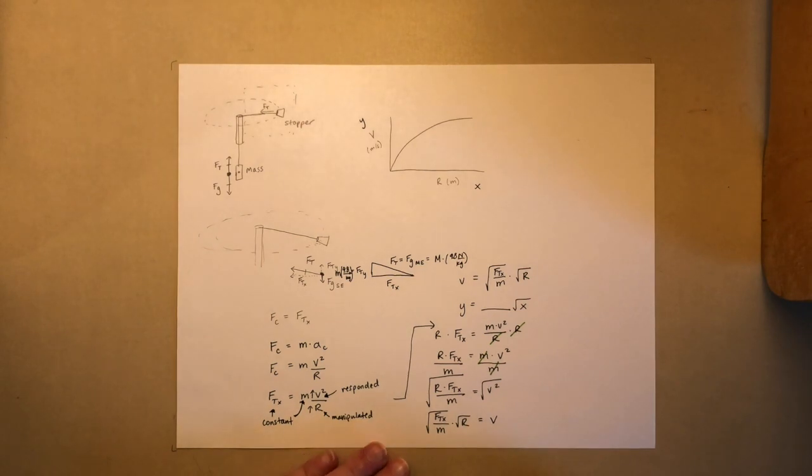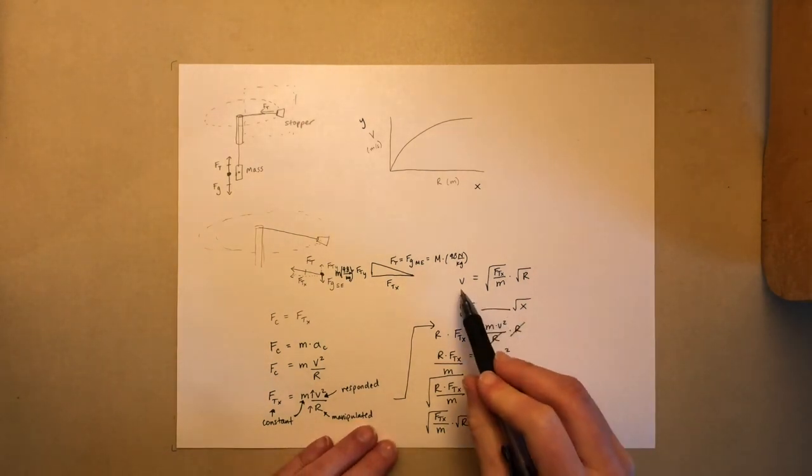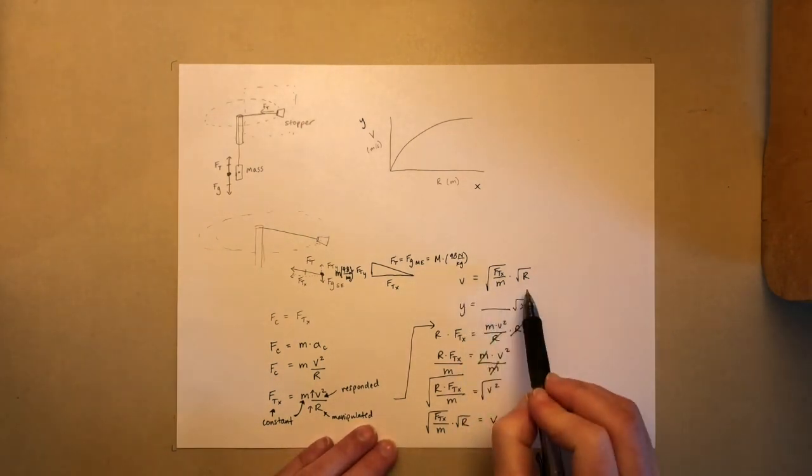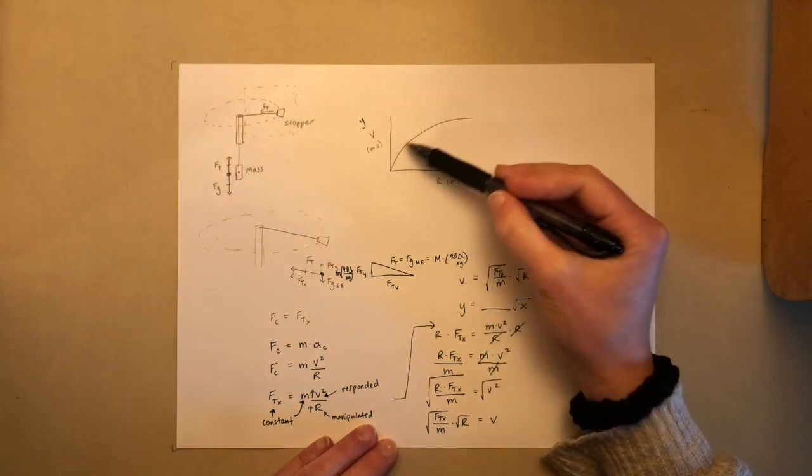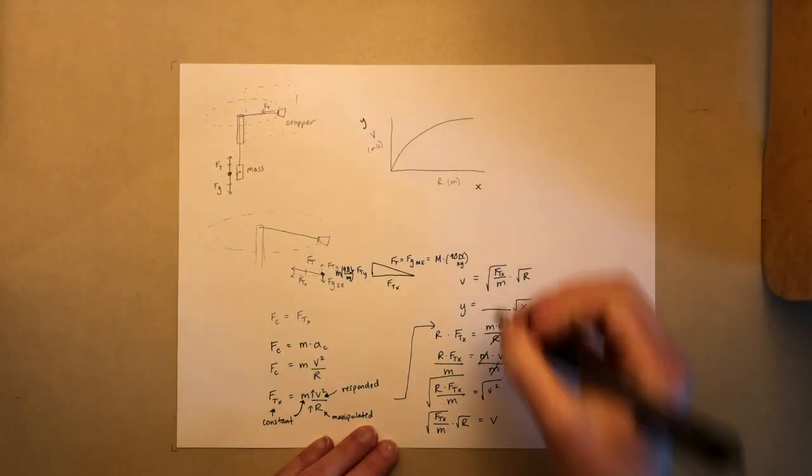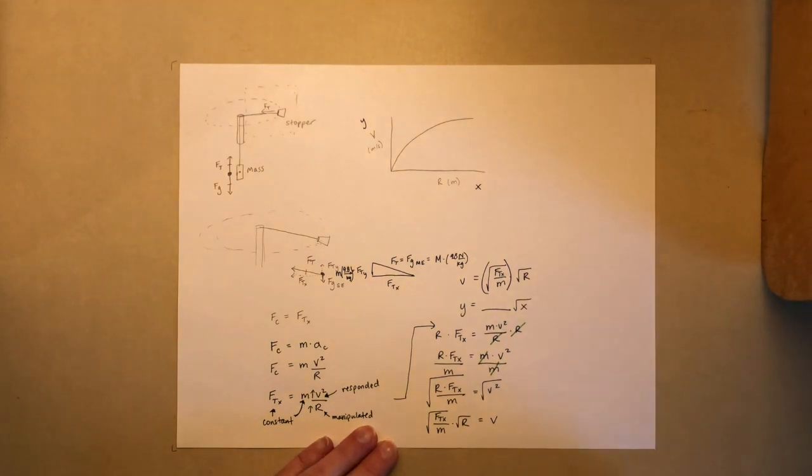So sure enough, in terms of the relationship between V and R, it follows this square root function. But this is our constant value that doesn't actually change here. The reason that I'm showing you this derivation is that I want you to do this same type of process, but for considering the orbital motion of planets.